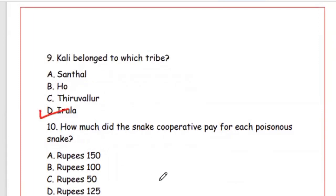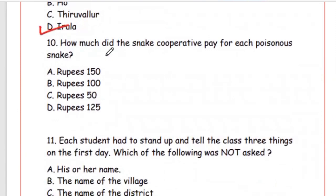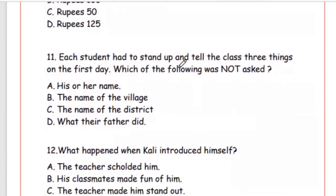Question 10: How much did the snake cooperative pay for each poisonous snake? The right answer is Option A, rupees 150. Question 11: Each student had to stand up and tell the class three things on the first day. Which of the following was NOT asked? Options: his or her name, the name of the village, the name of the district, what their father did. The right answer is the name of the district — that was not asked.